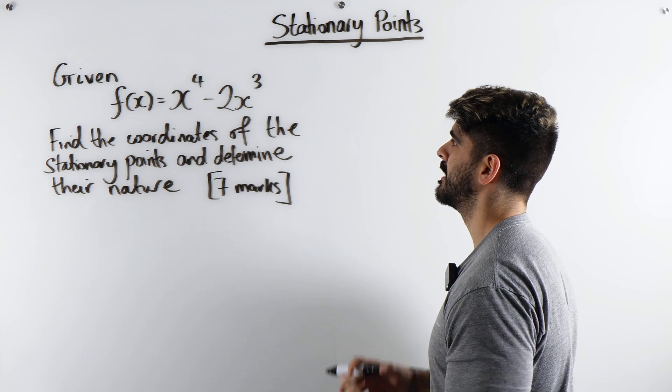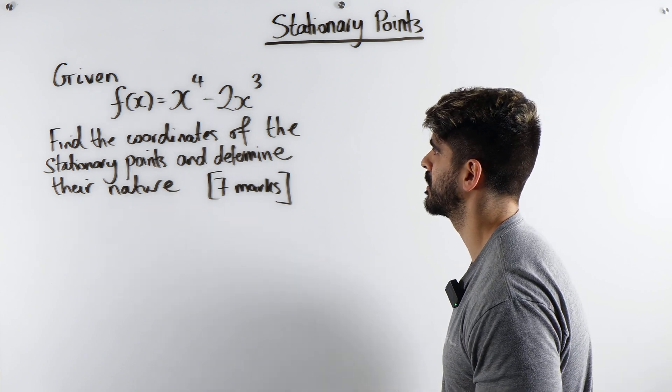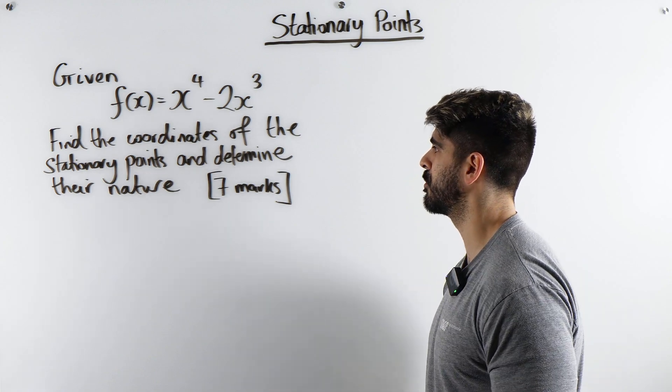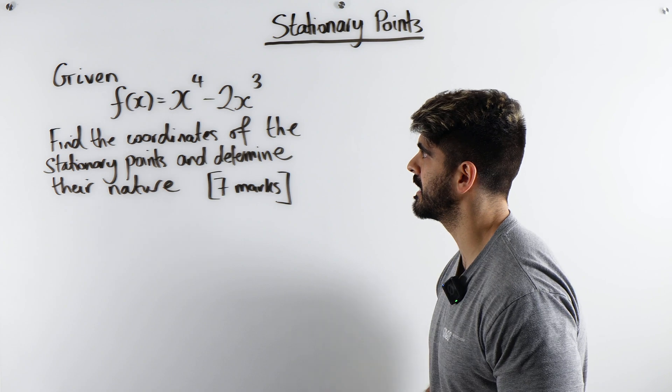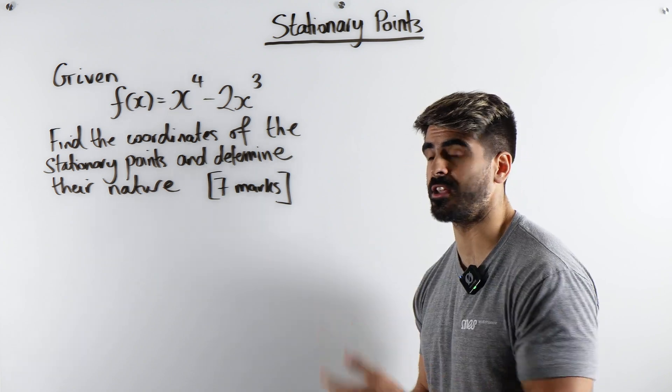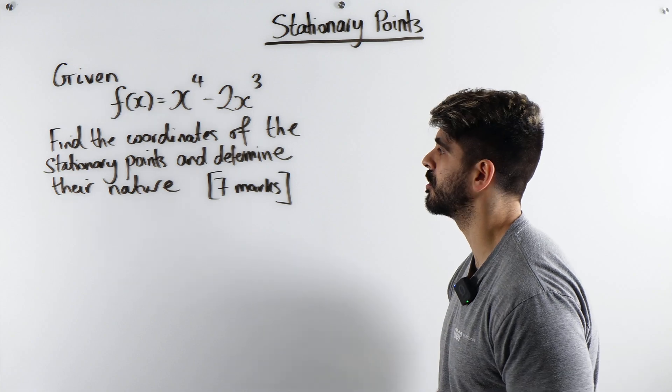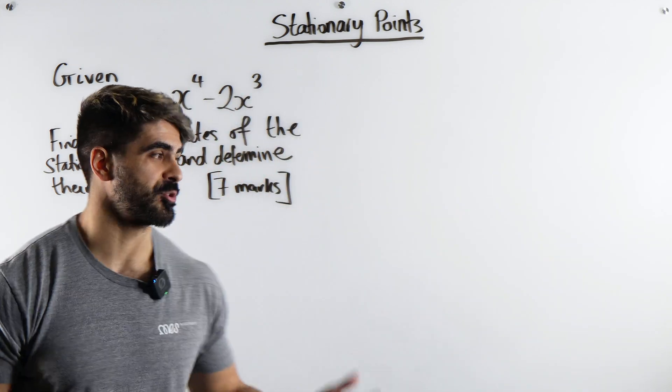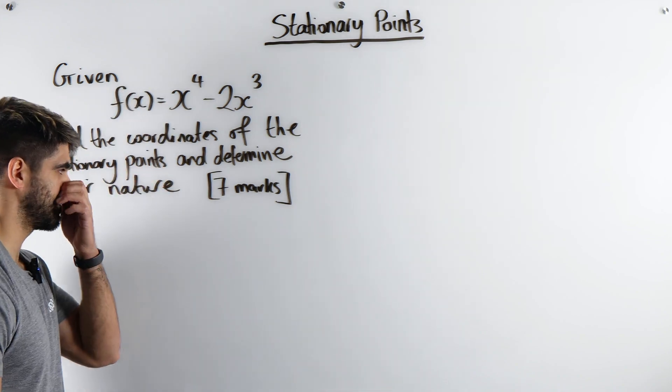So it says, given that f of x is x power 4 minus 2x cubed, power 4 meaning a quartic, find the coordinates of the stationary points and determine their nature. And with something like this, you could very easily sketch it as well. Maybe I'll do a sketch for you guys if you're lucky at the end, which wouldn't be part of the question, but I think it's good for you guys to know.